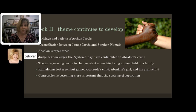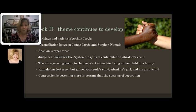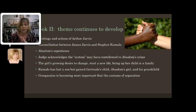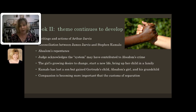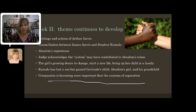The theme introduced in book one continues in book two, again through the writings of Arthur Jarvis, with the beginnings of reconciliation as we see James Jarvis and Stephen Kumalo move across the aisle to understand each other a little bit better. We see Absalom's repentance and willingness to marry the girl and bring her into the family. Even the judge, although he shows no mercy to Absalom, at least opens the window a little bit to recognize that maybe the system in South Africa contributed to Absalom's getting involved in crime. We see the girl representing this desire to change and to start a new life. And Kumalo has lost his son, but he's gained more family members back — he reclaims Gertrude's child, Absalom's girl walks out of the courtroom and says 'I am your daughter now,' and there's a grandchild that's going to be coming. We see this compassion becoming more important than the custom of separation.